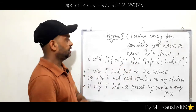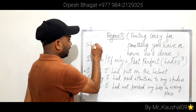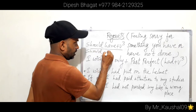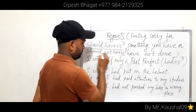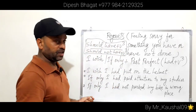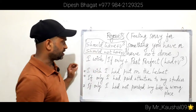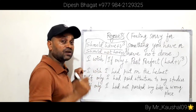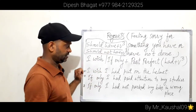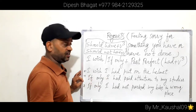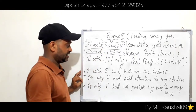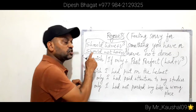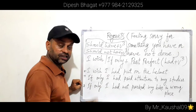There is also another structure for expressing regret about past actions: 'should have + past participle' or 'should not have + past participle'. For example: 'I should have put on my helmet.' 'I should have paid attention to my studies.' 'I should not have parked my bike in the wrong place.'